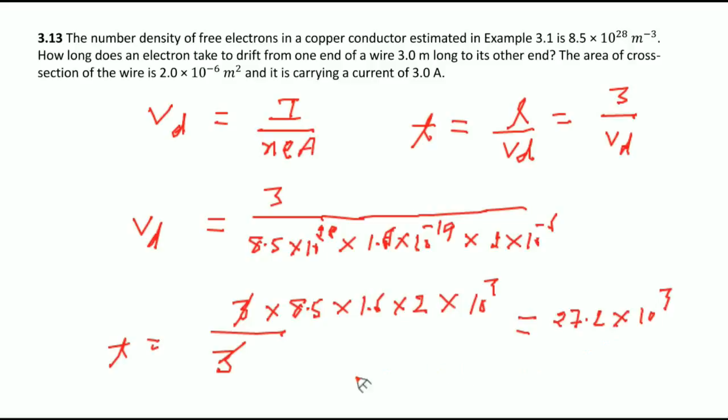So now you can write 2.72×10^4 seconds. If you divide by 3600 then it will be 7 hours. This is the answer you have.